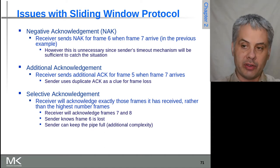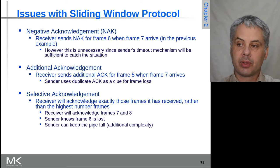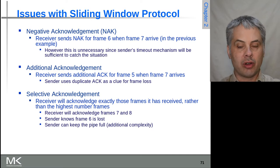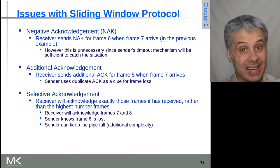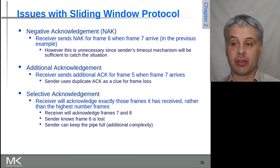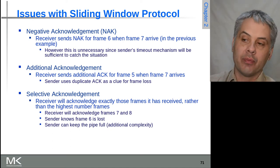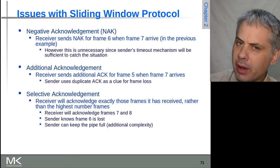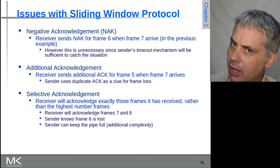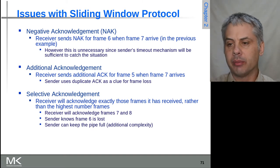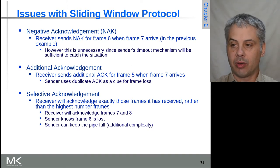Another option is to have an additional acknowledgement. When the receiver receives frame 7, it can send an acknowledgement for frame 5 again. This duplicate ACK of frame 5 is a clue to tell the sender: you just sent frame 7, but I haven't had anything newer than frame 5 arrive in the meantime. From that, the sender can deduce that frame 6 didn't arrive.